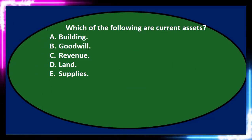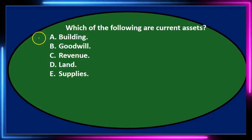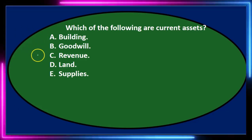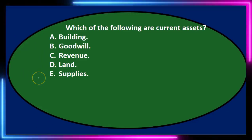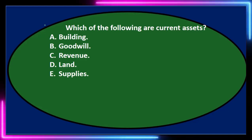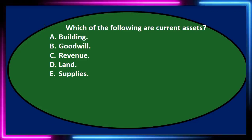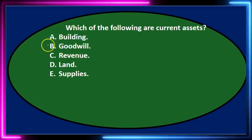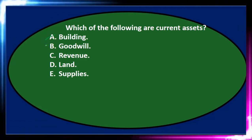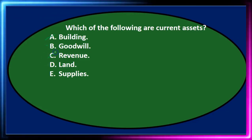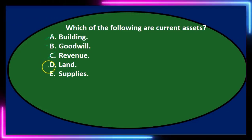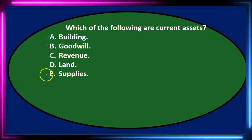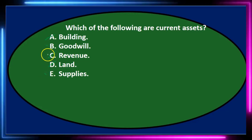Next question: which of the following are current assets? A: buildings — not a current asset, that's property, plant, and equipment, a long-term asset. B: goodwill — we might not know what that is, so keep it for now. C: revenue — that's on the income statement, not a current asset. D: land — that's property, plant, and equipment, long-term. E: supplies — we're going to use that fairly quickly, so it looks good. We're left with B and E.